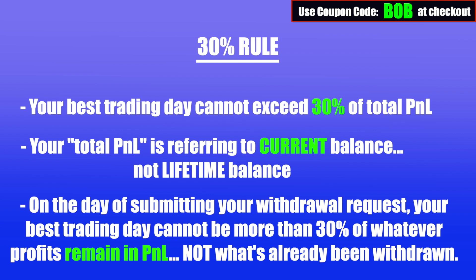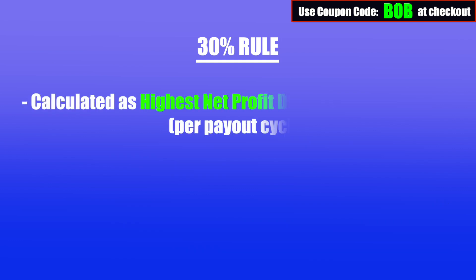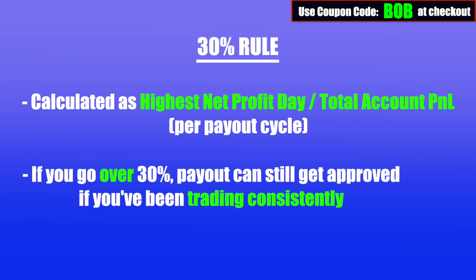So what this means is when traders submit a withdrawal request, whatever the profit balance currently is in that account, your best trading day cannot exceed 30% of that. The 30% consistency rule applies to your total P&L on the day of your withdrawal request. The way you would calculate this is your highest net profit day divided by your total account P&L for that payout period. If you do go over 30% but Apex sees you trade consistently, you should still get your payout.